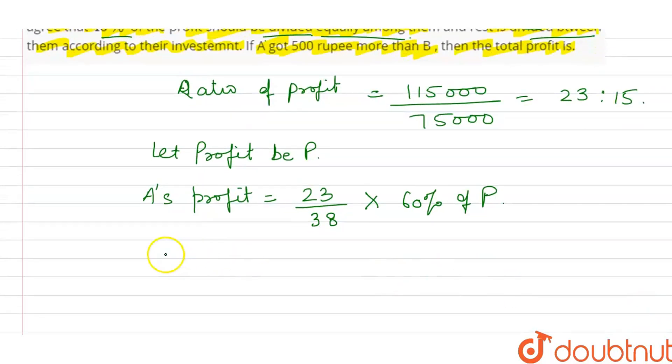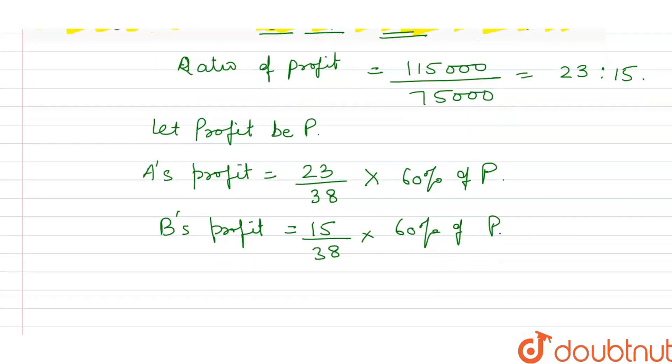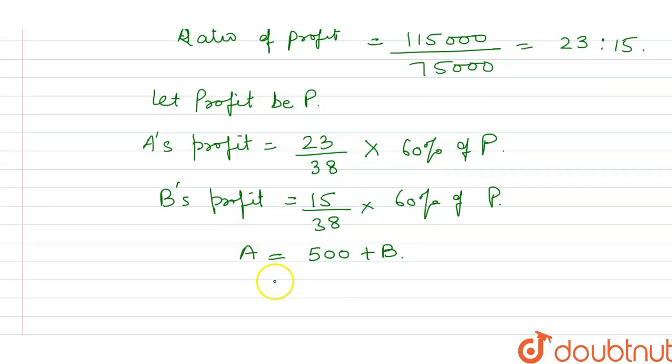And B will get: B's profit is 15 by 38 into 60% of total profit. Now, you're told that A got 500 rupees more than B. That means A is equals to 500 plus B. So we can write: A minus B is equals to 500. This equation we'll solve for A and B's profit.